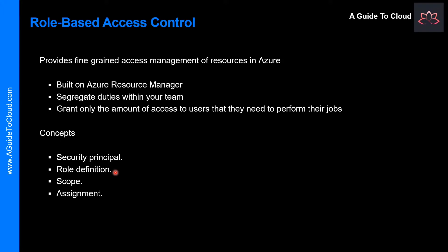The second concept is role definition — a collection of permissions that lists the operations that can be performed. Examples include reader, contributor, owner, and user access administrator. The third concept is scope — the boundary for the level of access that is required. Examples of scope include management group, subscription, resource group, and individual resources.